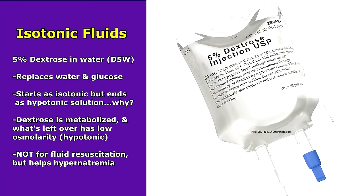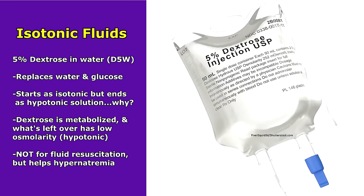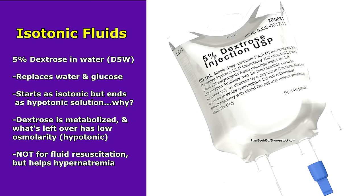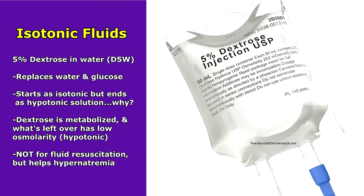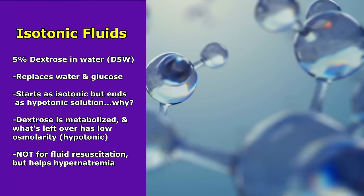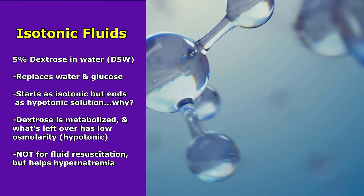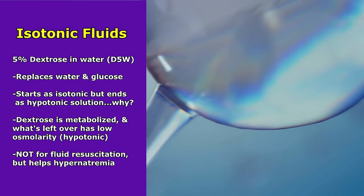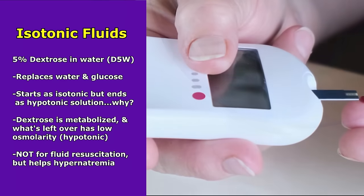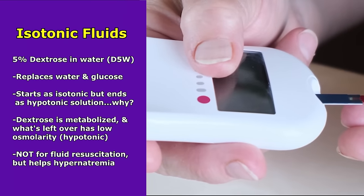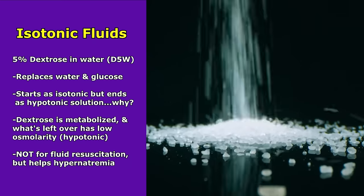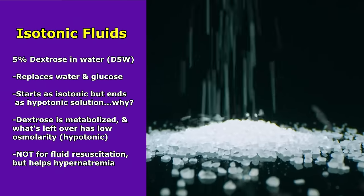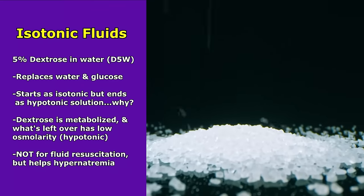The next isotonic fluid is 5% dextrose in water (D5W). This solution replaces water and glucose. Although it starts out as isotonic, it ends up working as a hypotonic solution. Why? Because when dextrose enters the body it gets metabolized, and what's left over is essentially just free water — giving it a low osmolarity, making it hypotonic. Because of this, D5W is not for fluid resuscitation and can actually increase blood glucose causing hyperglycemia. However, it can help treat hypernatremia by diluting the blood and decreasing sodium levels.